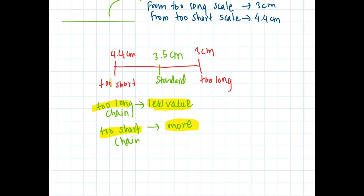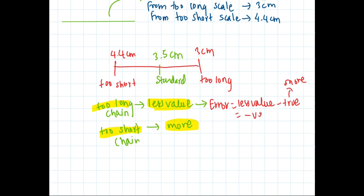So what is the error in each case? In the case of too long: the observed value is less, while the true value is more. Error equals observed value minus true value, which means less value minus more value — so the error comes out to be negative.